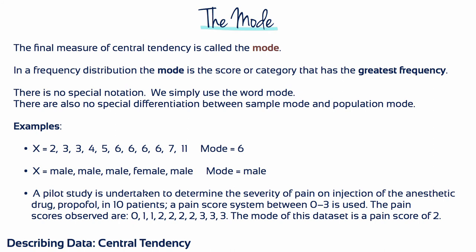Next, for these nominal measurements, male is the most common and therefore the mode. And lastly, the mode for the pain scores is 2.